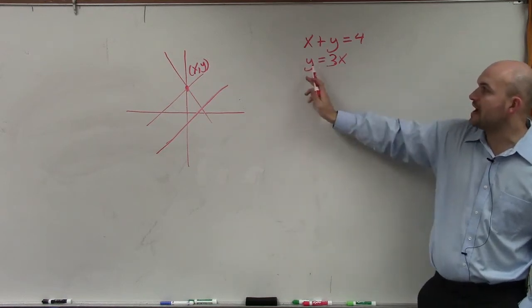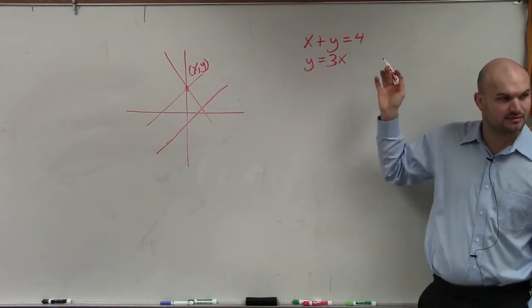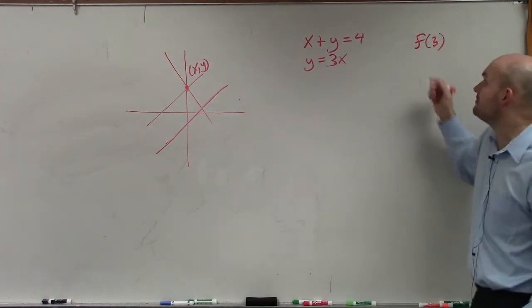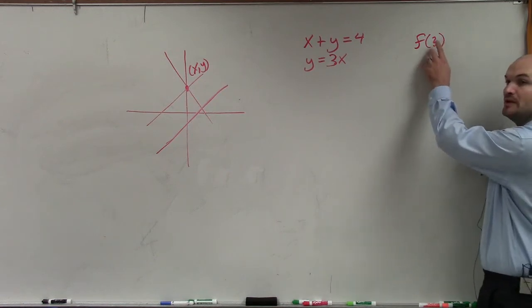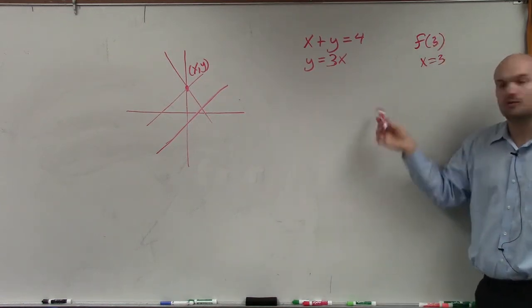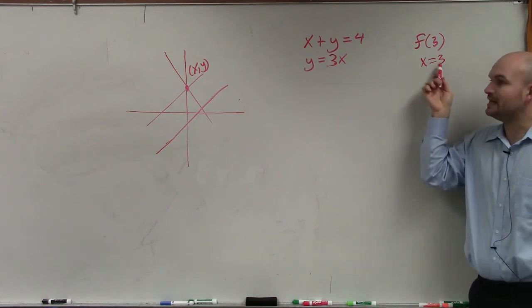Now the one thing you see here is I have y is equal to 3x. Just like when I said f of 3, what that meant was we want to find the value when x was equal to 3, right? So what I did was I replaced 3 in for x.